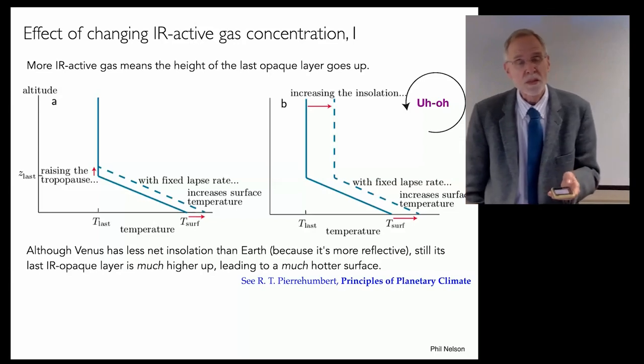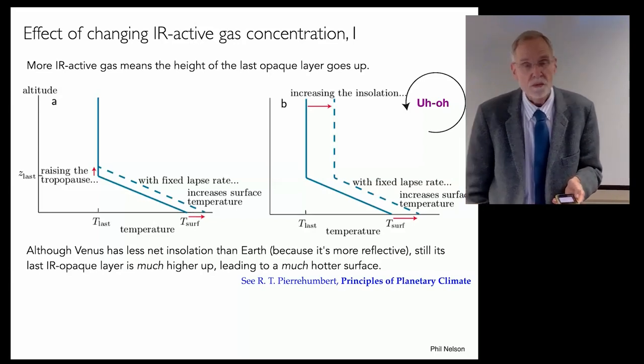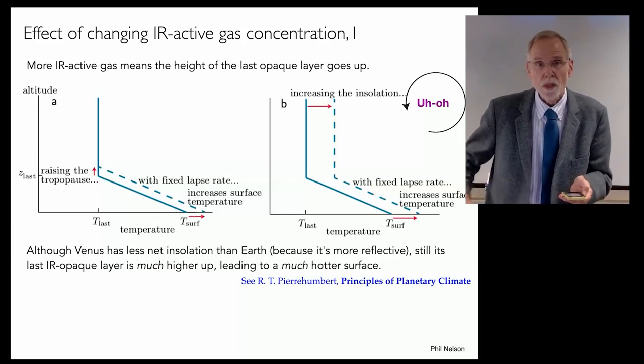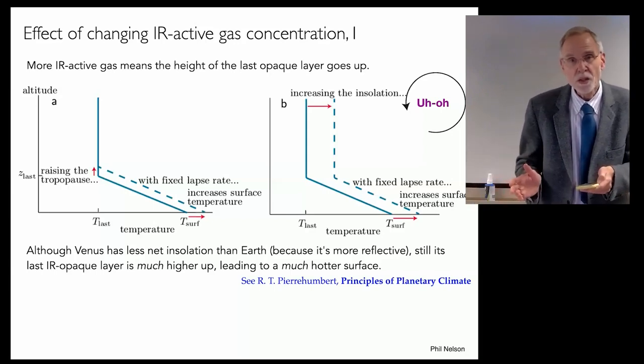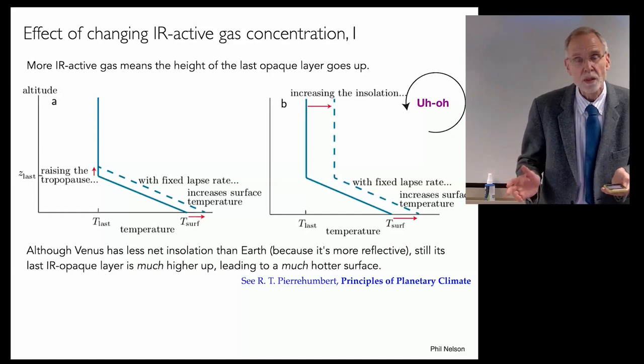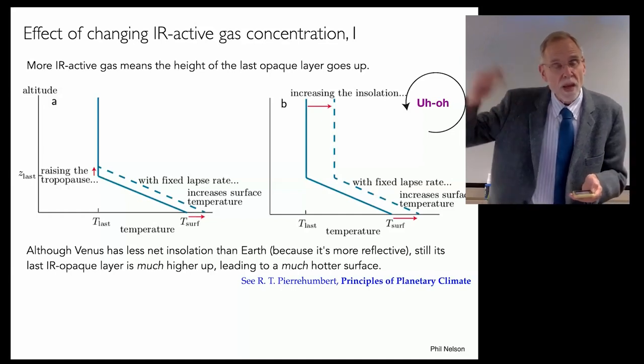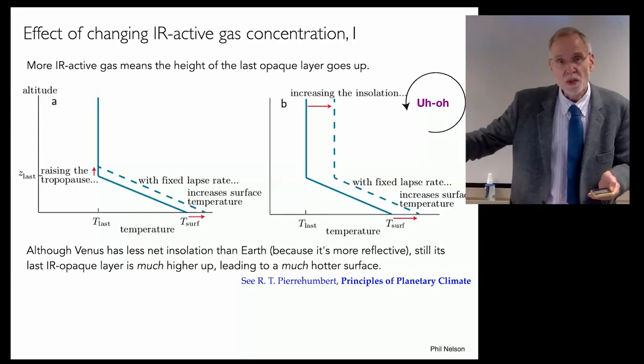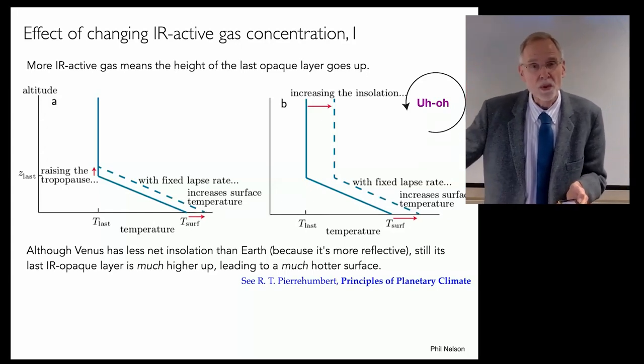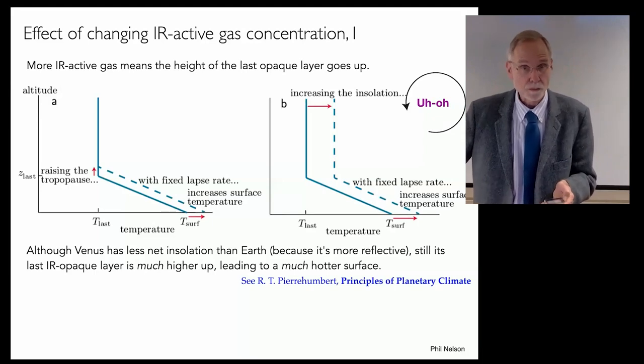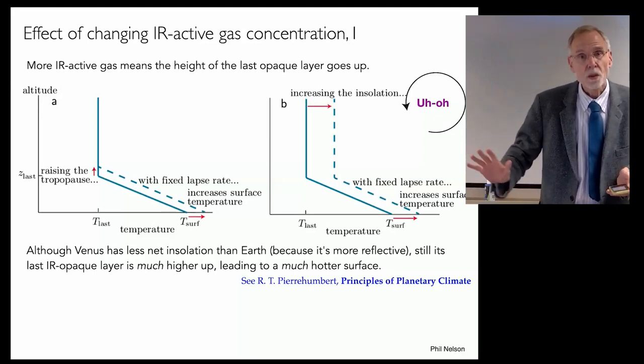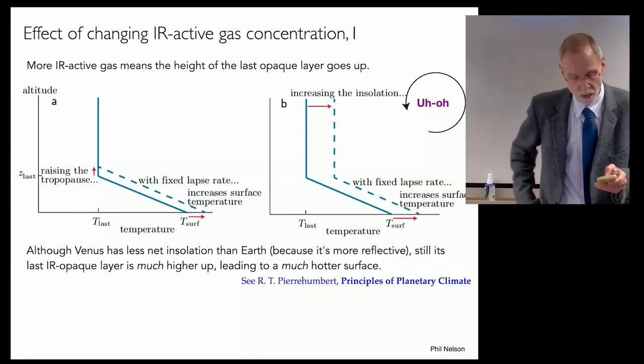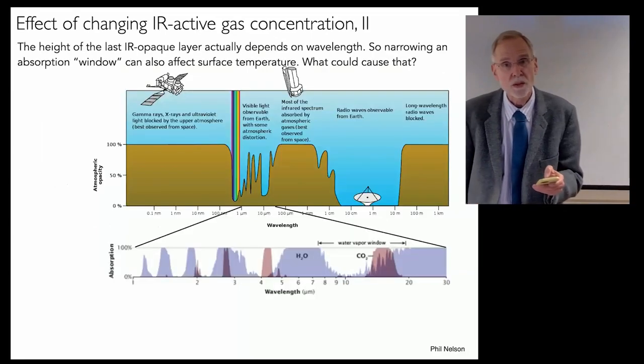We can also get some idea about the difference between Venus and Earth. They both have atmospheres, but Venus has a whole lot more carbon dioxide. Even though its net insolation is less than the Earth, because it's more reflective than the Earth, that last surface is way, way higher than it was on Earth, with a similar lapse rate, means that the surface temperature is hot enough to melt lead. So now we understand some differences between Earth, Venus, and Mars, and we got some idea about how greenhouse works.